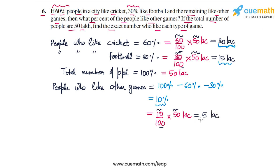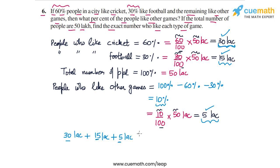So the answer is: 30 lakh people like cricket, 15 lakh like football, and 5 lakh like other games. We can verify: 30 lakh plus 15 lakh plus 5 lakh equals 50 lakh, which is the total number of people. The answer fits, and with this, question 6 of the exercise is solved.